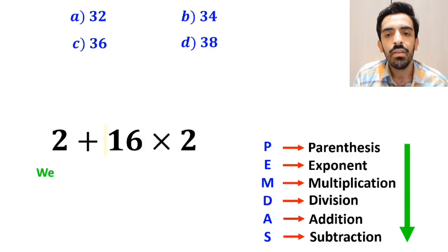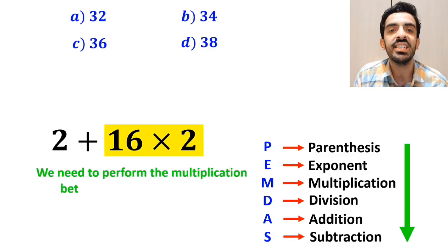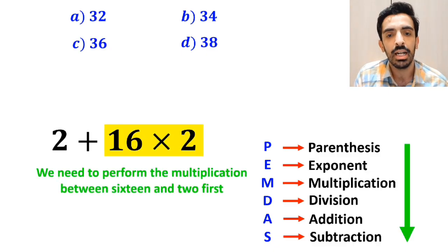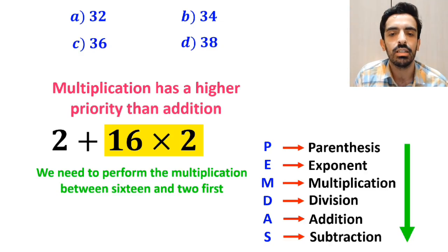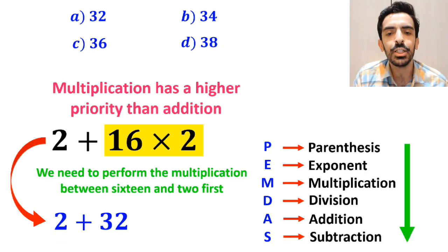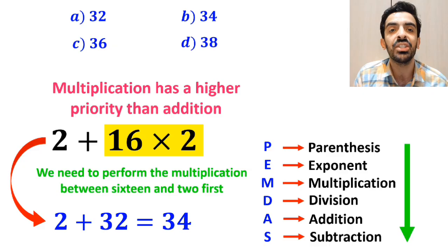Finally, we need to perform the multiplication between 16 and 2 first, because multiplication has a higher priority than addition. And this expression simplifies to 2 plus 32, which ultimately gives us the answer 34.